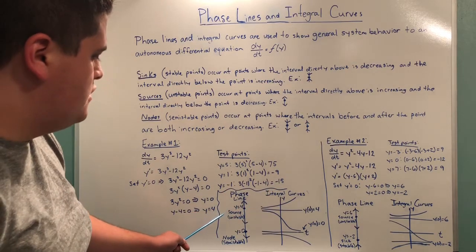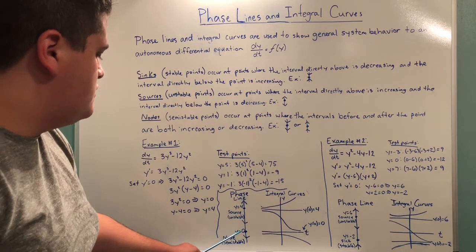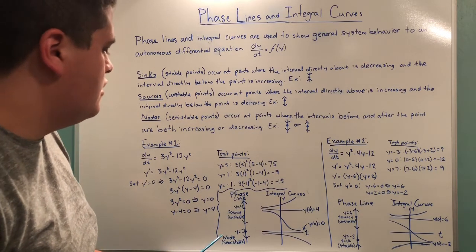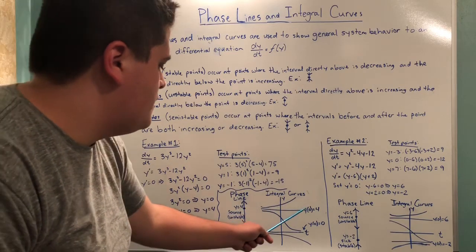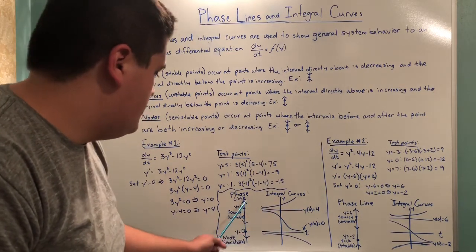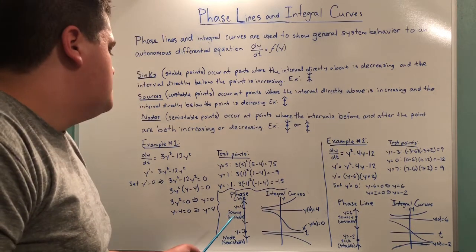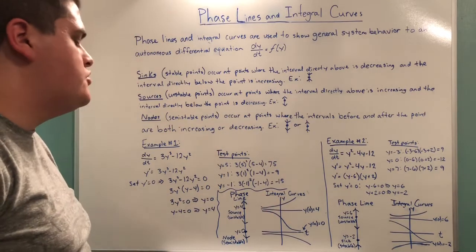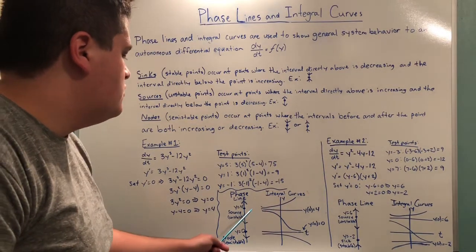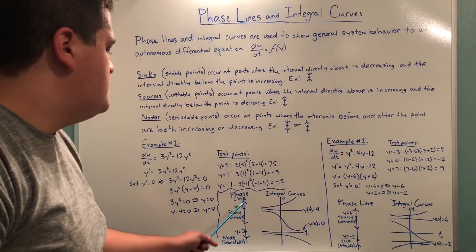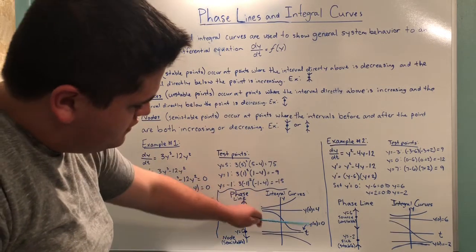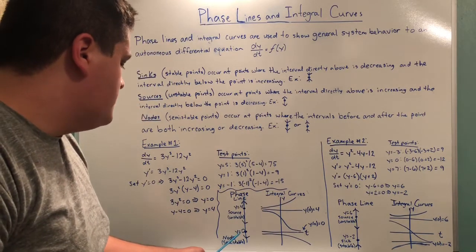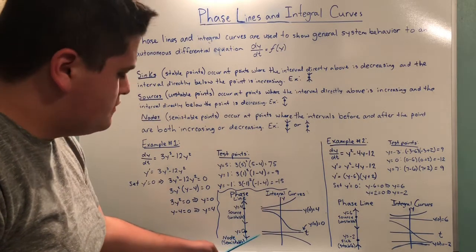So y equal to 4 is a source, also known as unstable, and y equal to zero is a node, also known as semi-stable. For the integral curves, we draw lines going straight from these points to line up with our phase line. Because the interval above y=4 is increasing, the curve continues up to infinity. The interval between the two points is decreasing so it falls, and below y equal to zero it is also decreasing so it goes down.